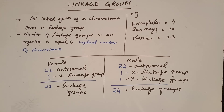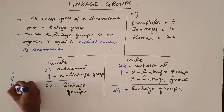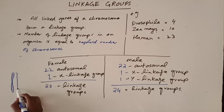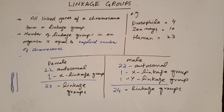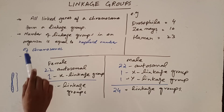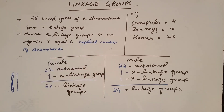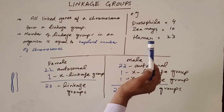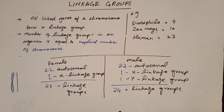At the end, there is the topic of linkage groups. When genes are linked on a chromosome, all linked genes on that chromosome form a linkage group. The number of linkage groups in an organism is equal to the haploid number of chromosomes. For example, Drosophila has four pairs of chromosomes and four linkage groups; Zea mays has 10 pairs of chromosomes and 10 linkage groups; humans have 23 pairs of chromosomes and 23 linkage groups.